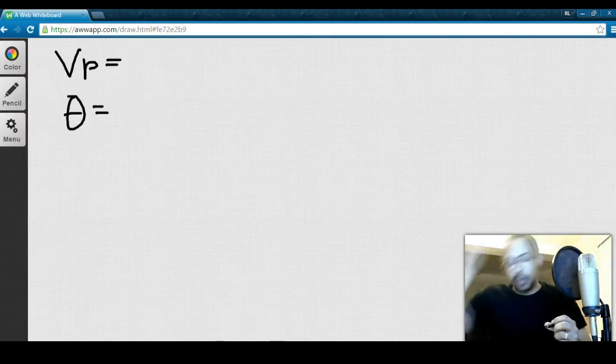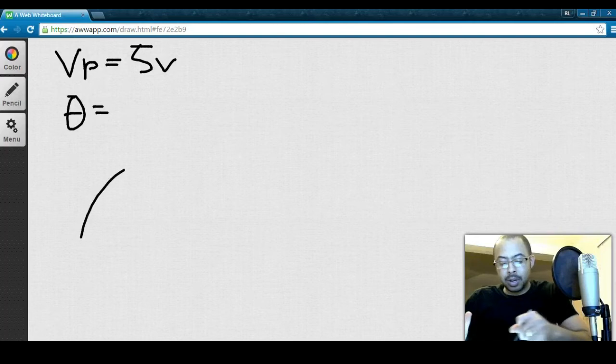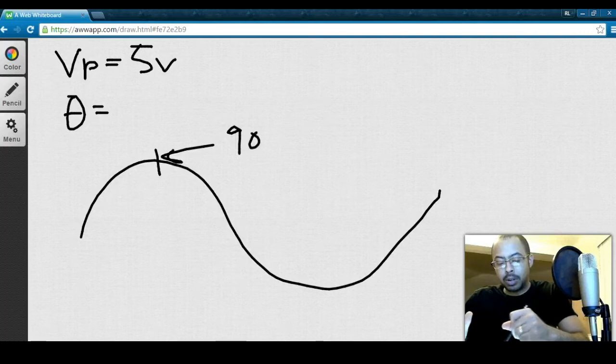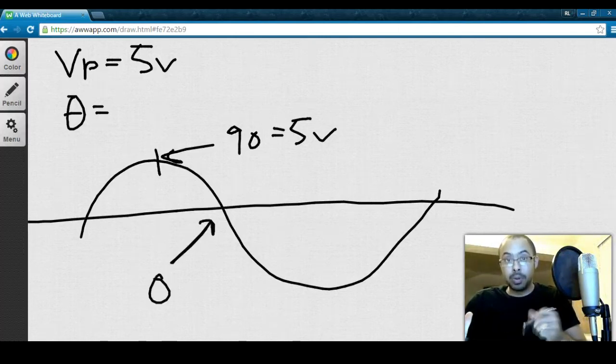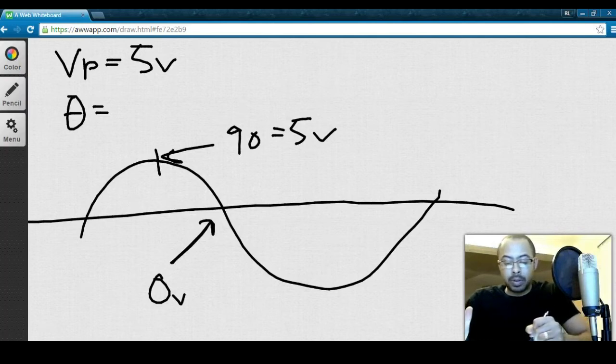So, say voltage peak is 5 volts. Alright, so that means that at the top of the waveform, at the 90 degree point, you are at 5 volts. And then of course your center line is always going to be your zero. So, say you want to figure out what the voltage is going to be at 30 degrees.